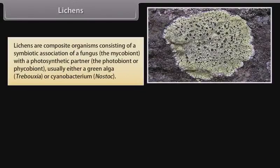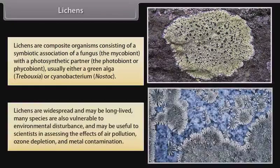Lichens are composite organisms consisting of a symbiotic association of a fungus — the mycobiont — with a photosynthetic partner — the photobiont or phycobiont — usually either a green algae, Trebouxia, or a cyanobacterium, Nostoc. Lichens are widespread and may be long-lived.